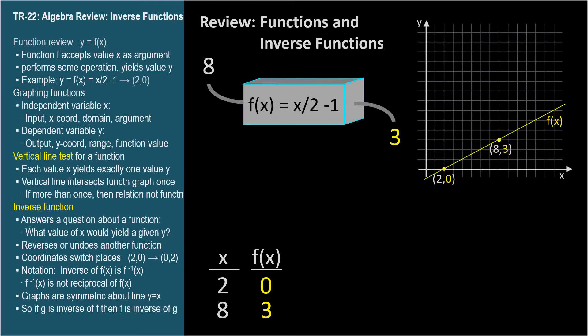This is a linear function, so we only need two points to graph it. The yellow line is f of x equals x over 2 minus 1.